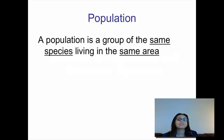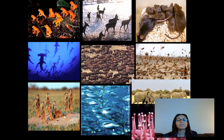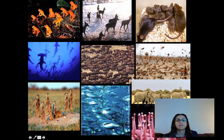First, the definition of population. A population is a group of the same species that live in the same area. If we look at the next slide, each one of these is an example of a population. Here's a population of frogs, here's a population of buffalo, here's a population of mice. Each one of these represents a population — the same species living in the same area. A key part of that is the same area as well.